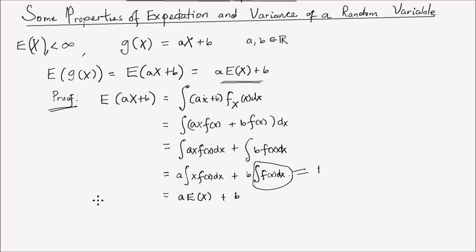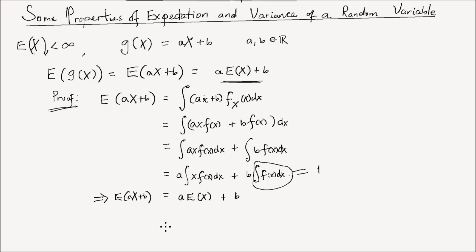So we have shown that the expectation of a·x + b equals a times the expectation of x plus the constant b. That's the first property.